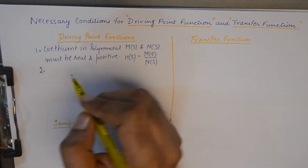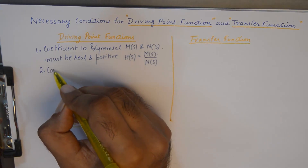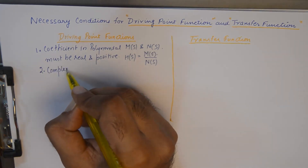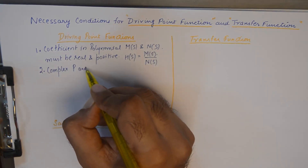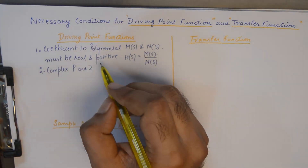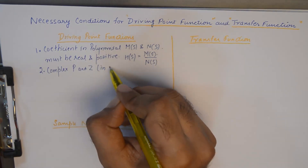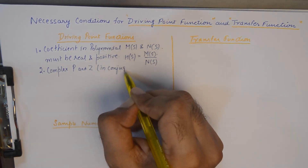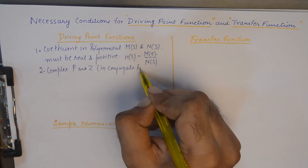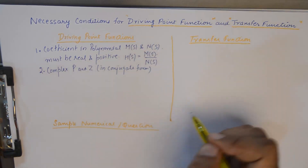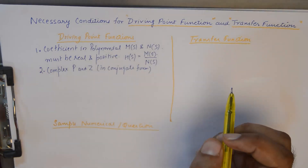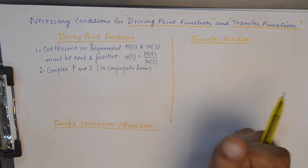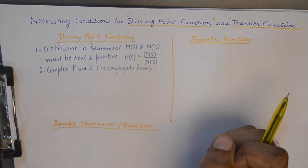Secondly, complex and imaginary poles and zeros: if any of the poles and zeros are complex, then they must exist in conjugate form.